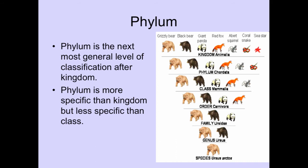Let's review the rest of the classification. Domains are at the top, then we have kingdom. As the UT students told you, it goes: kingdom, phylum, class, order, family, genus, species. The mnemonic is: King Philip Came Over For Green Soup.